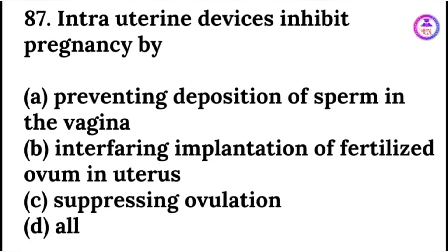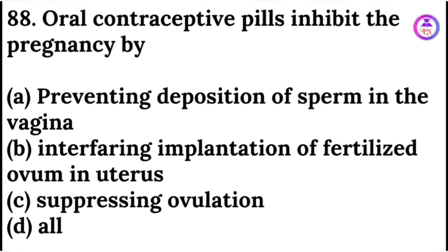Intrauterine devices inhibit pregnancy by interfering with implantation of fertilized ova in the uterus. Oral contraceptive pills inhibit pregnancy by suppressing ovulation.